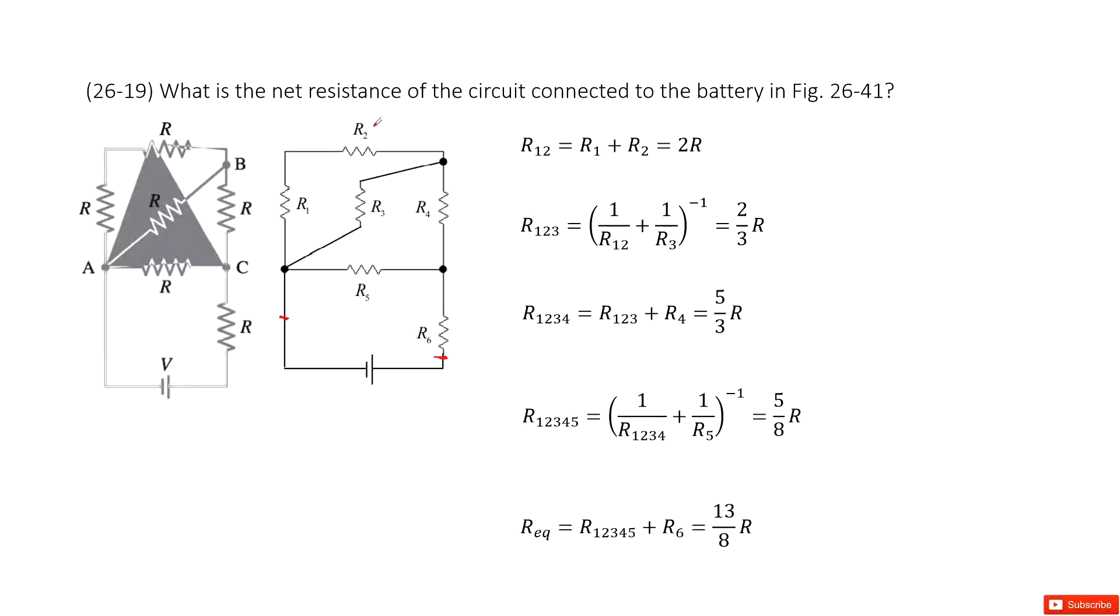And then we look at there. First one, at the very end, we have R1 and R2 connected in series. Do you agree? So that means the equivalent resistance for R1 and R2 should be R1 plus R2 equal to 2R, right? 2R.